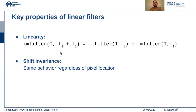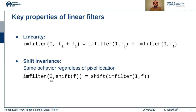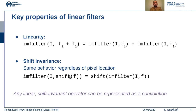The second important property is shift invariance. If you shift a pixel location and then apply a filter, or apply a filter and then shift, and this property holds, then the filter is considered shift invariant. Any filter that satisfies both linearity and shift invariance can be considered a linear filter. Any linear shift-invariant operator can be considered as convolution — that is the basic definition of convolution.